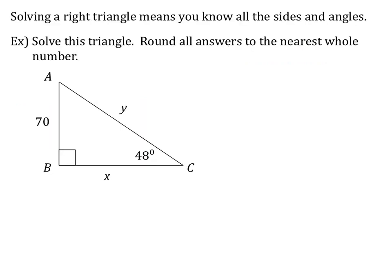Now we are going to solve a right triangle. Solving a right triangle means finding all the sides and all the angles. We're going to solve this right triangle and round all answers to the nearest whole number. I only have one side and one angle, so I cannot use the Pythagorean theorem — I have to use trig. I'll name the three sides relative to the 48 degree angle: 70 is opposite, x is adjacent, and y is the hypotenuse. I'll start by solving for x, though you could solve for y first — it doesn't matter.